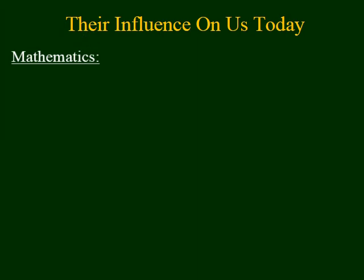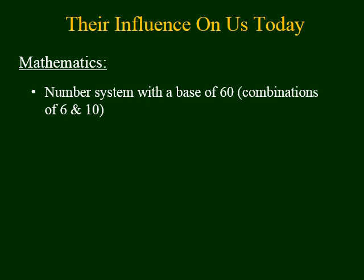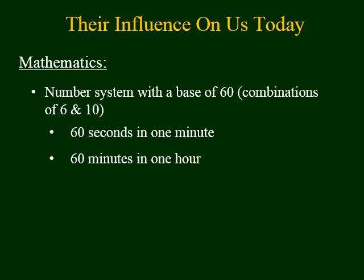Mesopotamian society goes back to about 3000 BC. You might be thinking: what does that have to do with me? However, they have a major impact on us today, and one example comes in the form of mathematics. They had a number system with a base of 60, with different combinations of sixes and tens. Today we have 60 seconds in a minute, 60 minutes in an hour, and 360 degrees in a circle.